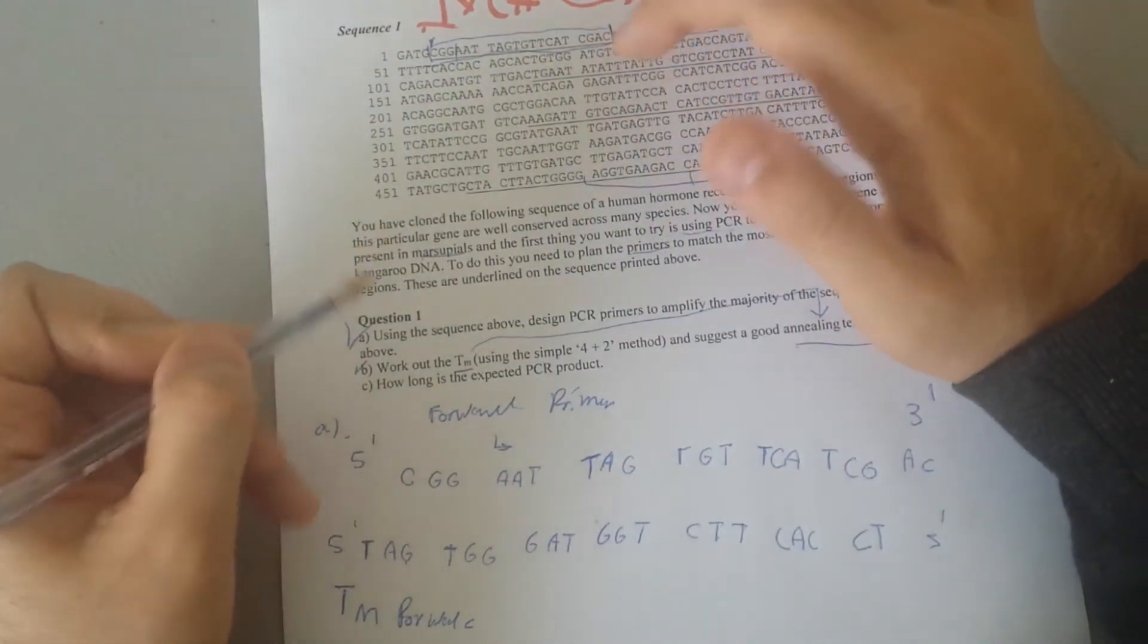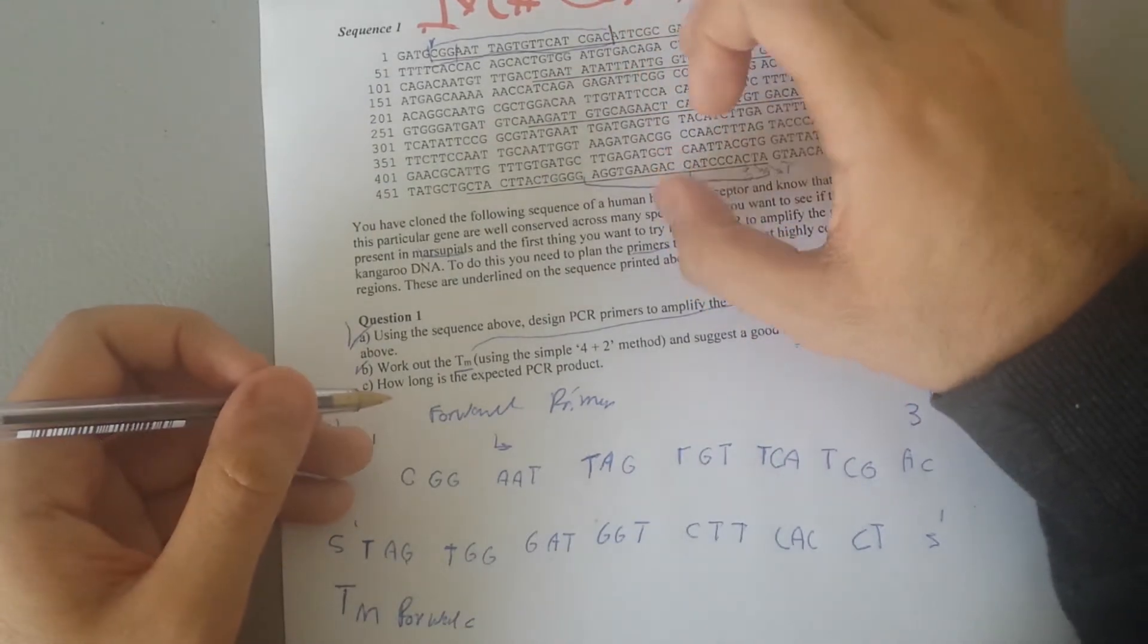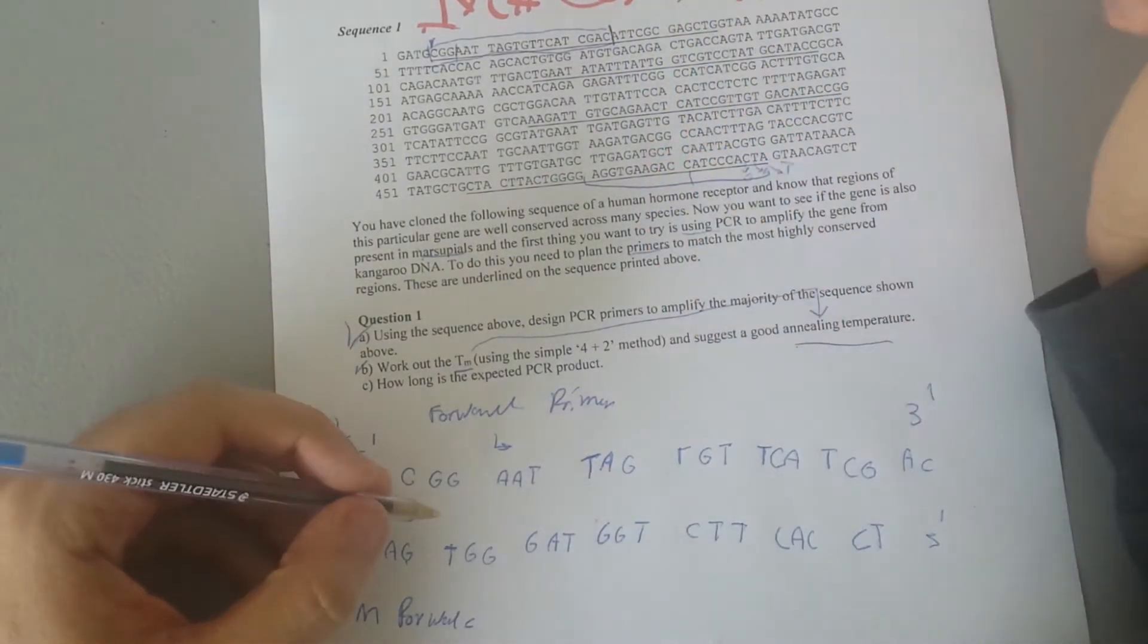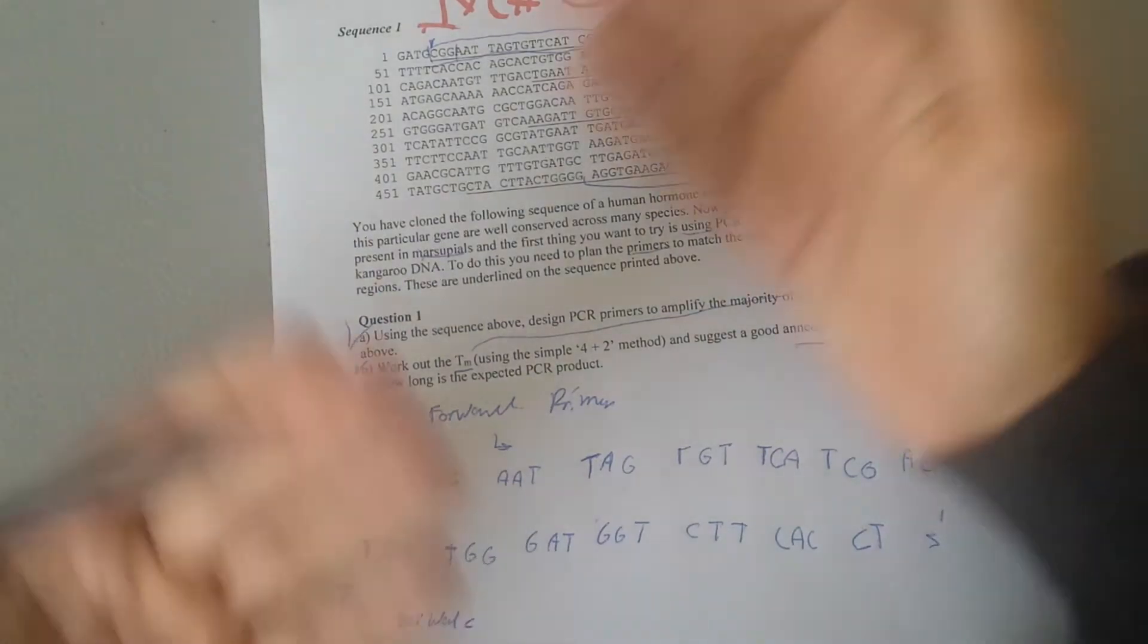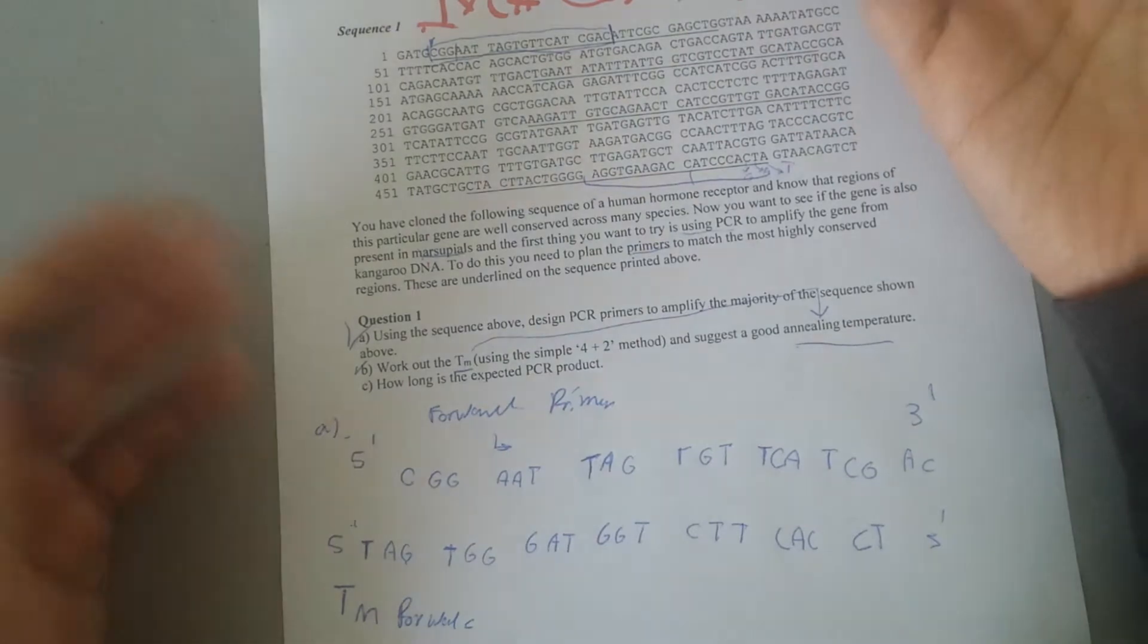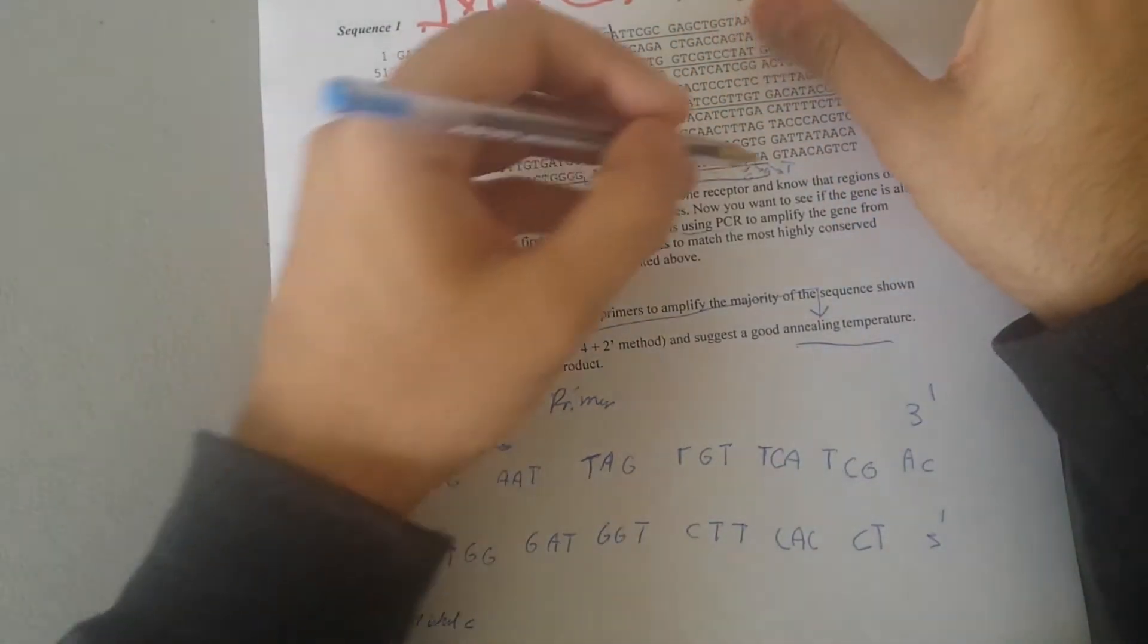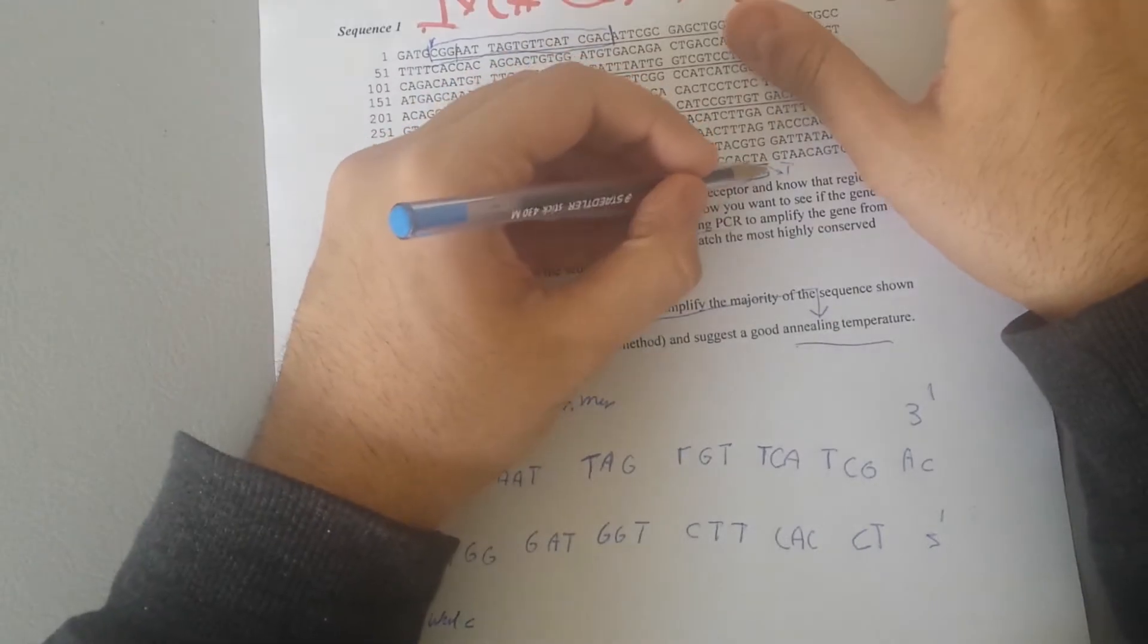But for the reverse primer, we have to make it five prime to three prime. We know in the reverse strand it is usually written three prime to five prime. So what should we do? We have to make it reverse complementary.